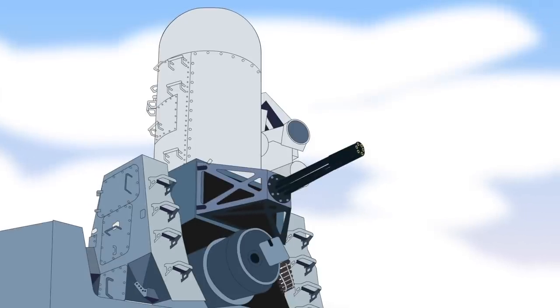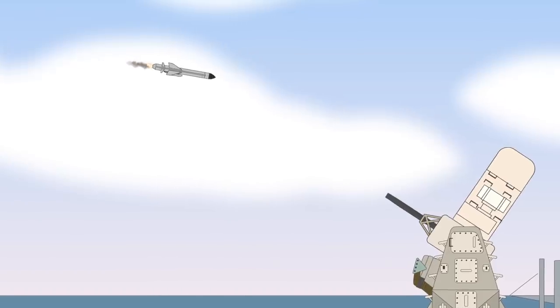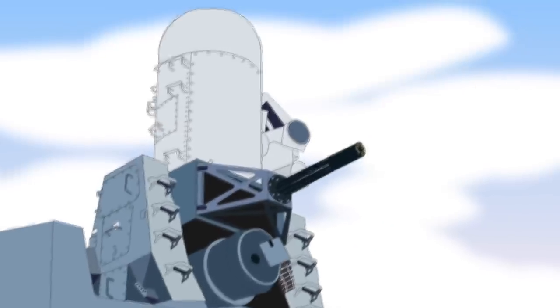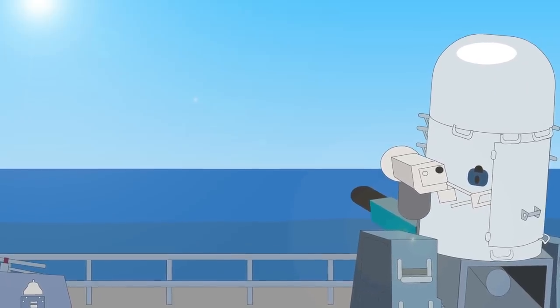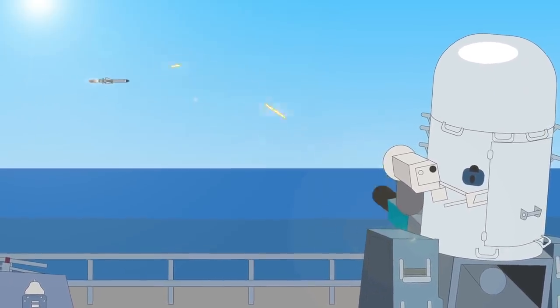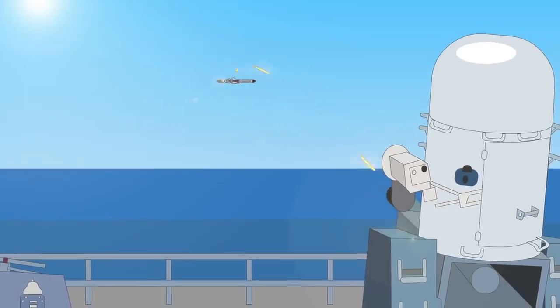When the target approaches within a distance of 5 miles, the lower radar locks on the target and starts to track it. The Vulcan engages the target at a distance of 2 miles or less. The system is designed to use the first two rounds to guide the fire towards the target.